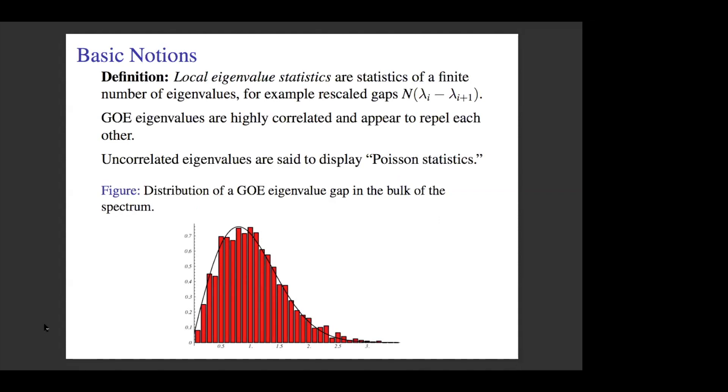For eigenvalue statistics, we talked about what happens globally. Now I want to talk about what happens locally, for just a few eigenvalues. As simple as possible, consider the gap statistics: what is the distribution of the gap between two adjacent eigenvalues? To understand this, I want to return to our example of Gaussian ensemble. If you look at the eigenvalues in the bulk of the spectrum, say around zero, you find that they are highly correlated. In fact, they appear to repel each other like charged particles. If you graph the distribution of such a gap, you can see it's actually very unlikely that the gap is near zero. This is the repulsion we're talking about. The opposite concept is that of uncorrelated eigenvalues, which we call Poisson statistics. When eigenvalues are highly correlated or repel, we say it has GOE statistics. When they're uncorrelated, we say it has Poisson statistics.